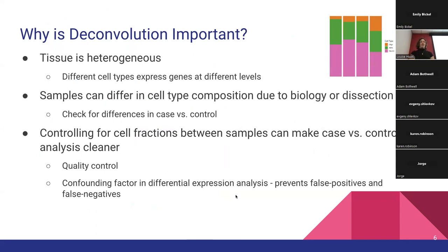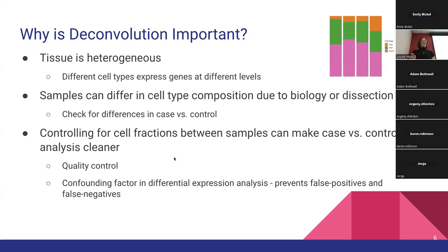So why is deconvolution important in bulk RNA-seq analysis? We know that brain tissue is heterogeneous, made up of complex and different cell types. Samples within a study can differ in cell type composition due to biology such as case-control, or technical variation such as dissection. An example we dealt with was our habenula dataset, where the habenula can be difficult to dissect from the thalamus, and we used deconvolution to check the proportion of habenula in each sample for better QC. We can use this data to control for cell fractions between samples, reducing confounding factors and preventing false positives and negatives in downstream analyses.